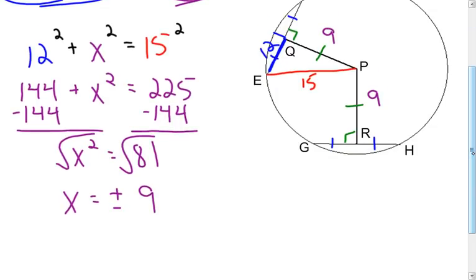And all I need to do is put my label on there. So to answer my final question, the length of segment PR is going to be 9 centimeters.